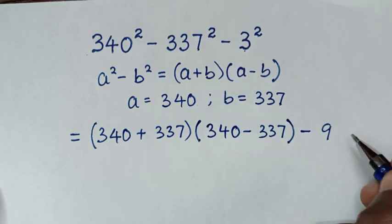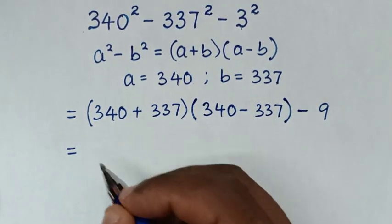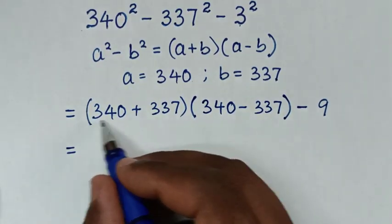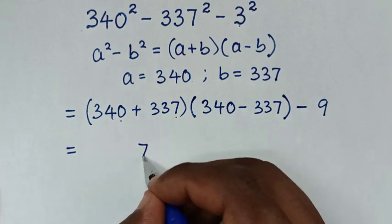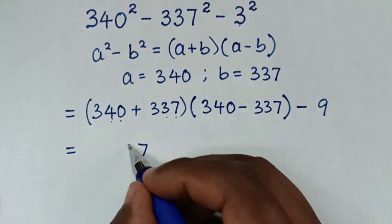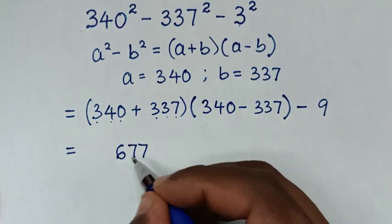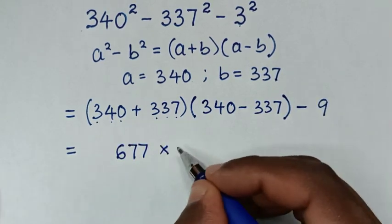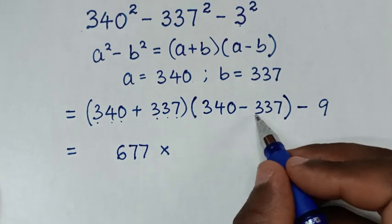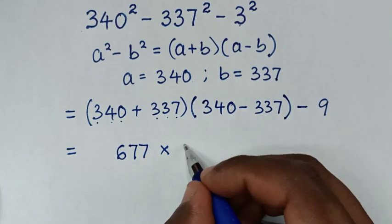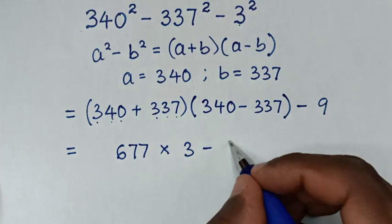3² is 9. Then it will be equal to: 0+7 is 7, 4+3 is 7, 3+3 is 6, so 340 plus 337 equals 677. Then times (340 minus 337), then minus 9.